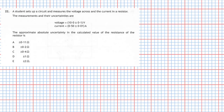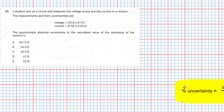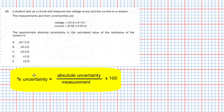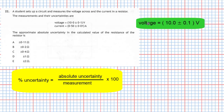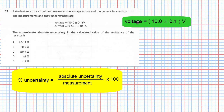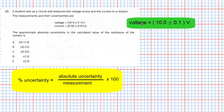The percentage uncertainty is the absolute uncertainty divided by the measurement, times 100. Let's take a look at the voltage data first. The measurement is 10 volts.